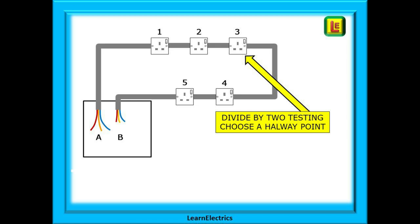A radial circuit can stay as it is as there is no return leg to interfere with the test results. We are going to use the divide by two method — a proven and reliable method of finding a fault both quickly and accurately. Simply choose a halfway point on the circuit to begin the tracing. Finding halfway is sometimes guesswork if it's the first time you've seen the installation, but if you installed the circuit you should know the route of the cables. It's always a good idea to mark the two cable ends at the consumer unit with A and B and to mark each socket one, two, three etc. I usually put masking tape on the socket face and write on that — it can then be easily removed after testing.